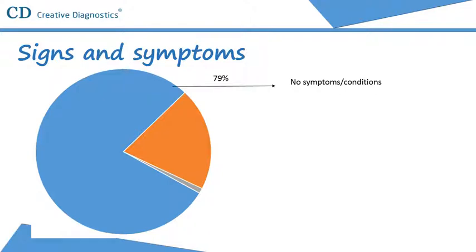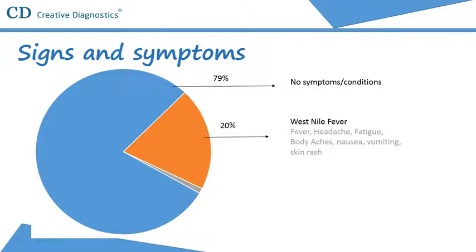About 20% of people who become infected with West Nile virus will develop West Nile fever. Symptoms include fever, headache, fatigue and body aches, nausea, vomiting, occasionally with a skin rash and swollen lymph glands.